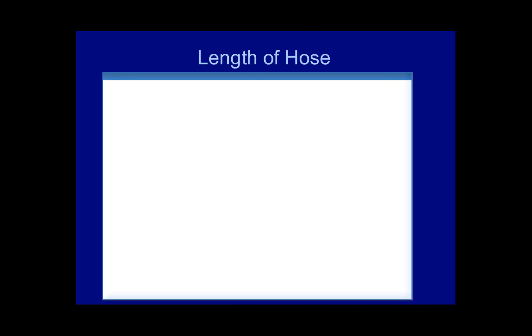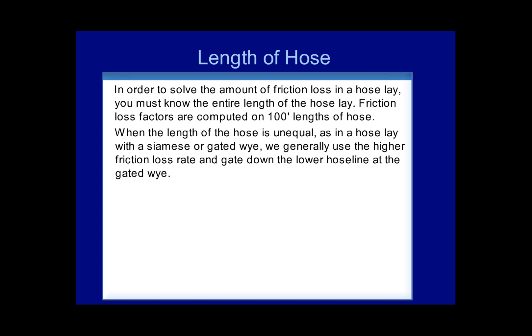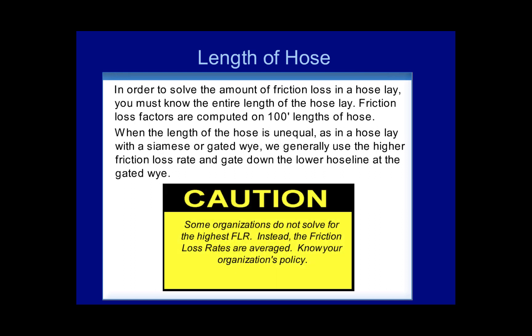Length of hose. In order to solve the amount of friction loss in a hose lay, you must know the entire length of the hose lay. Friction loss factors are computed on 100-foot lengths of hose. When the length of the hose is unequal, as in a hose lay with a Siamese or gated Y, we generally use the higher friction loss rate and gate down the lower hose line at the gated Y. Use caution: some organizations do not solve for the highest FLR; instead, the friction loss rates are averaged. Know your organization's policy.